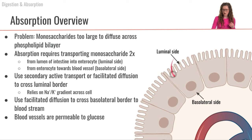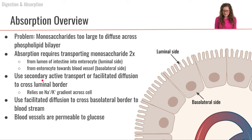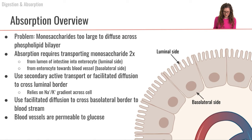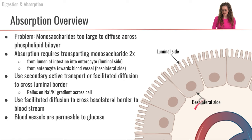To perform this absorption, we are going to use two different methods of transport: secondary active transport and facilitated diffusion. The secondary active transport relies on a sodium-potassium gradient across our cell. To get across the luminal side, we'll use either secondary active transport or facilitated diffusion. To get across the basolateral side, we'll use facilitated diffusion. Once across the basolateral side, monosaccharides can immediately enter the blood vessels, which are permeable to them.